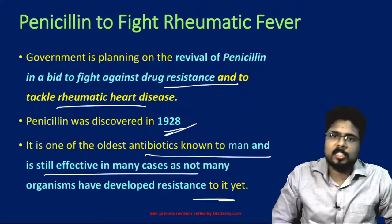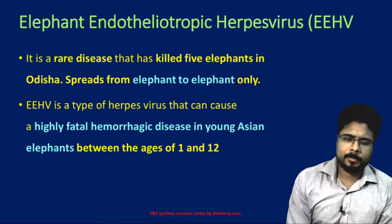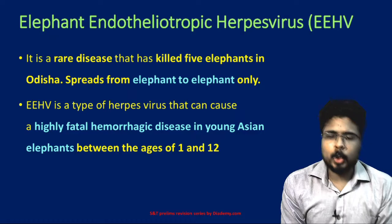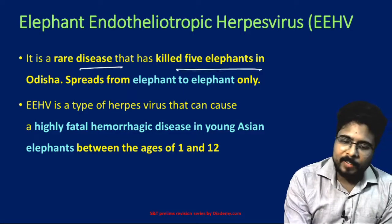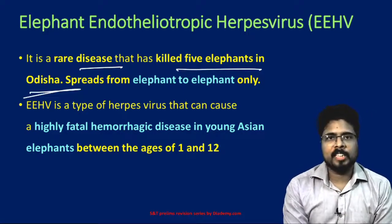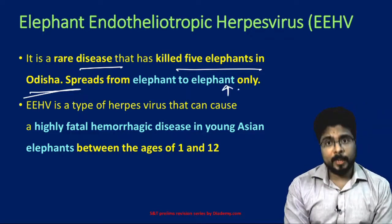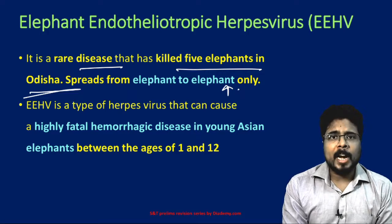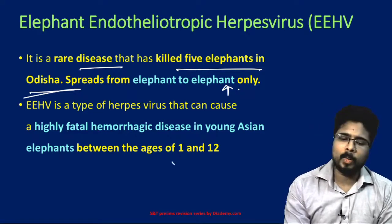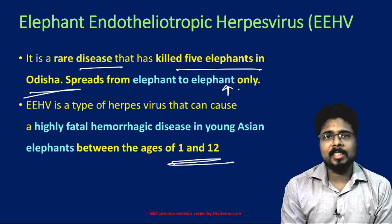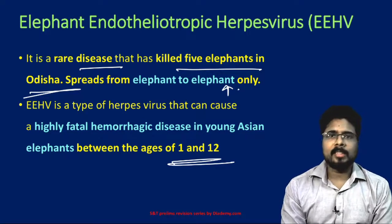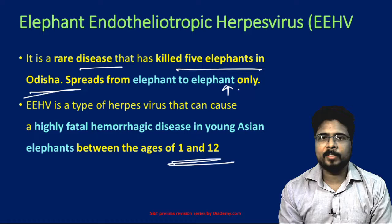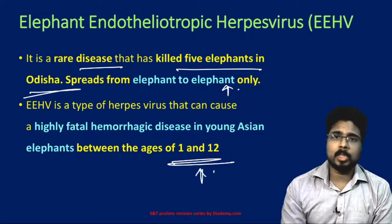Elephant Endotheliotropic Herpes Virus, or EEHV, is a rare disease that has recently killed five elephants in Odisha. It spreads from elephant to elephant only. EEHV is a type of herpes virus that can cause a highly fatal hemorrhagic disease in young Asian elephants between the ages of one and twelve.